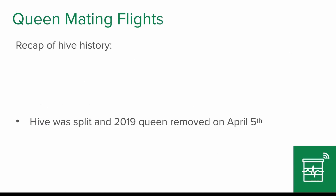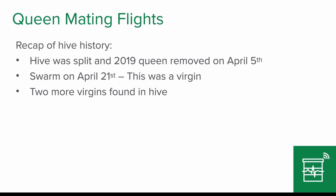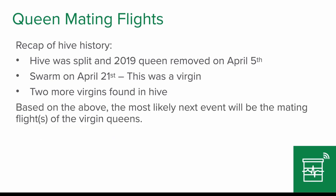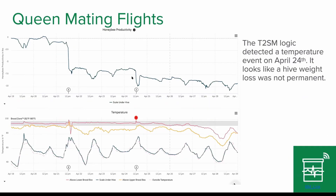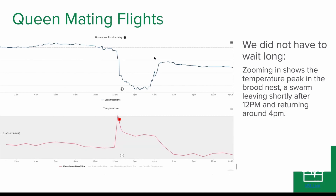Now the history of this hive: it was split on April 5th, we had a swarm on April 21st — that was a virgin. We found two more virgins in this hive. Based on this, the most likely next event would be the mating flights of the virgin queens, because they have to get mated in order to lay. We have the swarm and then this first temperature event on April 24th after the swarm. Here we have a temperature event that looks like another swarm, with the exception that the weight loss was not permanent — the weight dropped and then came back. The bees left and they came back, and I'm pretty sure this was the virgin going on her mating flight and returning as a mated queen. They left around noon and returned to the hive around 4 PM.